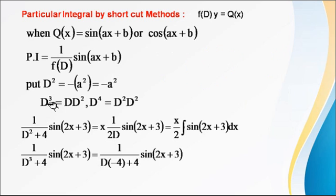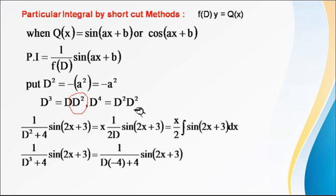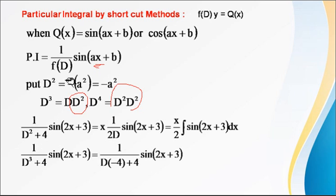If D³ appears, write it as D · D² and replace D² with minus a². If D⁴ appears, write it as D² · D² and replace each D² with minus a², where a is the coefficient of x. This method is applicable when the denominator is not equal to zero.